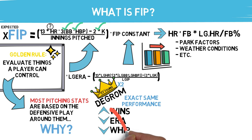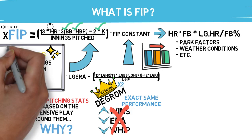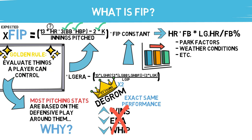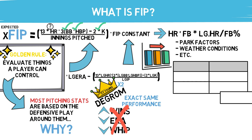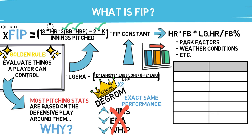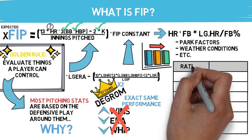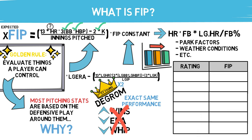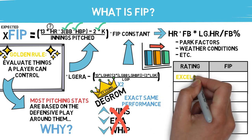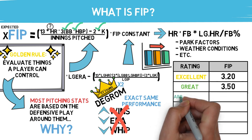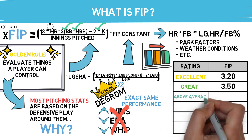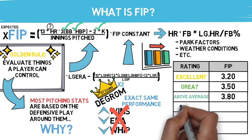So the next time you go to analyze a player's past performance, remember our golden rule, and make sure what you're referencing only takes into account things within that athlete's control. To give you a general outline of how FIP ranks pitchers: this is variable because of our constant, but here's how 2019 shook out. Guys who fell into the excellent FIP range include Scherzer, Gerrit Cole, and deGrom. The great category includes guys like Syndergaard and Patrick Corbin, and guys like Marcus Stroman and Kyle Hendricks fell into the above-average range.